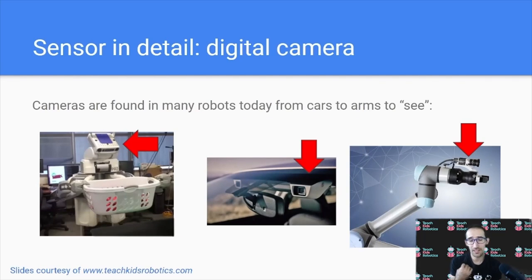If we consider sensors again, a digital camera is a sensor that allows a robot to take a picture of the environment to identify what's going on around it. Cameras are found in many robots today, from cars to robotic arms to robotic laundry machines.